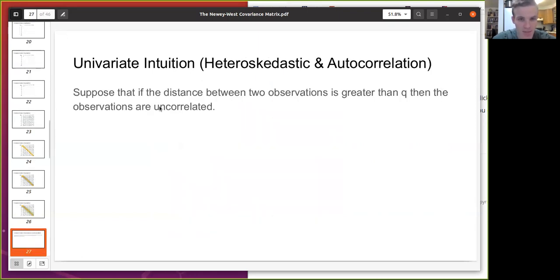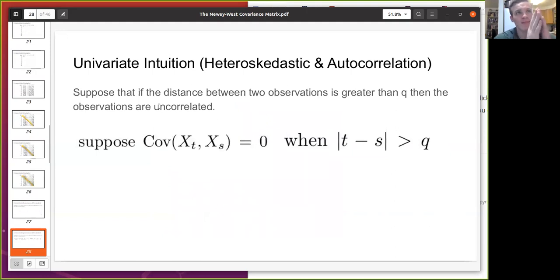So using that a little bit, let's assume that the distance between two observations goes to zero after we have greater than a lag of Q. All right. So as soon as observations are more than Q periods apart, we're just going to say there's no covariance between them.